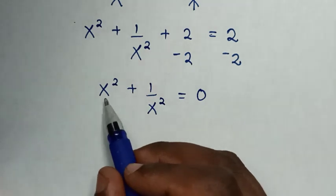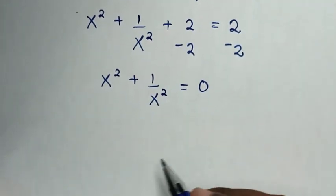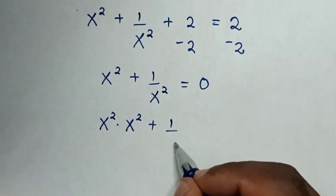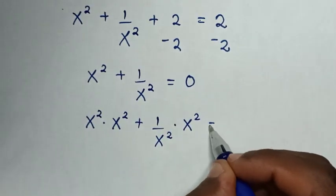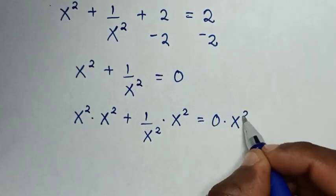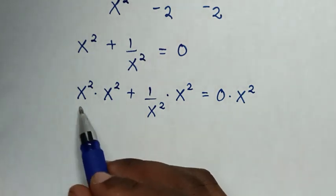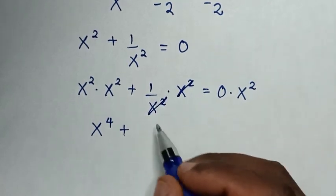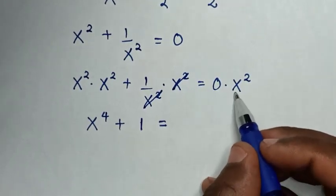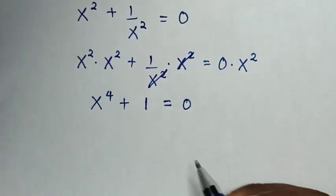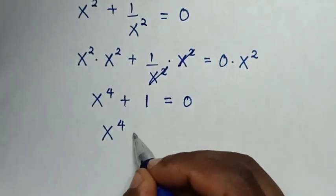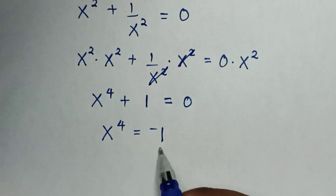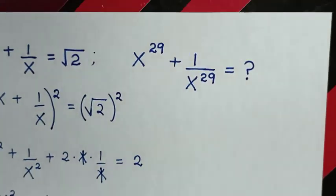Then in the next step, we multiply by x squared on both sides. So it will be x squared times (x squared plus 1 over x squared) equals 0, which gives us x to the power 4 plus 1 equals 0, so x to the power 4 equals negative 1. We will use this value to find x power 29.